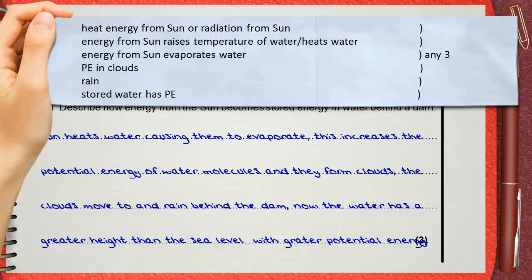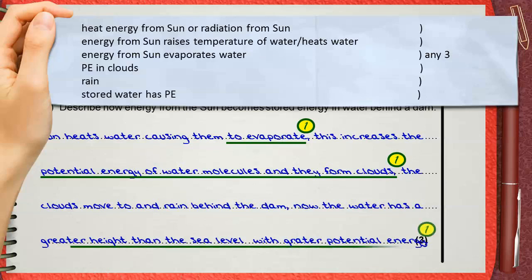Let's test our answer. Here is one mark for mentioning the evaporation. Here is another mark for mentioning that clouds have higher potential energy. This is the third mark for mentioning that water behind the dam has greater potential energy than water after the dam.